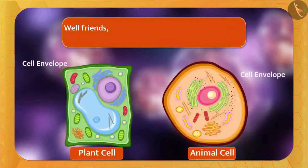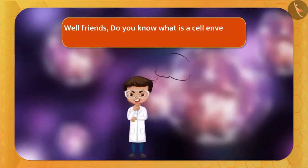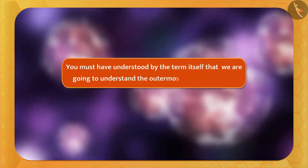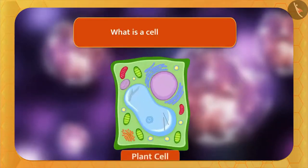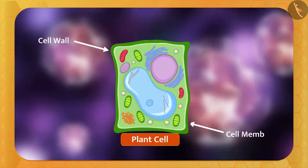Well friends, do you know what is a cell envelope? You must have understood by the term itself that we are going to understand the outermost layers of the cell. Let's understand what is a cell envelope. It is made up of cell wall and cell membrane.